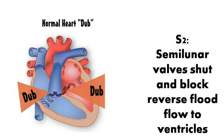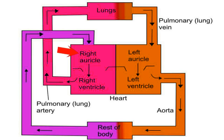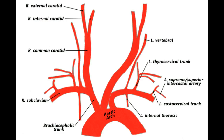Valves play a very important role in maintaining the direction of blood flow. Let's see the whole process of blood circulation in short. Right auricle receives deoxygenated blood through two major veins from the whole body, then it pumps this deoxygenated blood into the right ventricle, which sends this blood to the lungs through the pulmonary artery. Oxygenated blood from the lungs comes back to the heart at the left auricle through the pulmonary vein. Then oxygenated blood enters the left ventricle, and the left ventricle pumps this blood into the aorta. Many arteries branched out from the aorta carry the blood to the whole body.